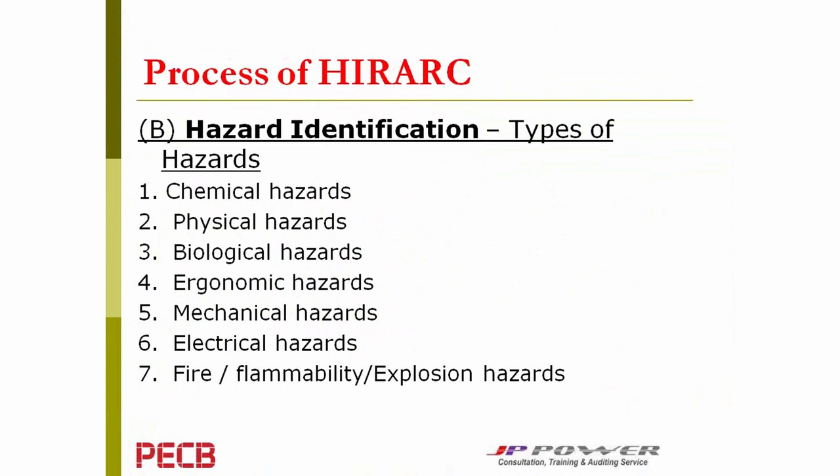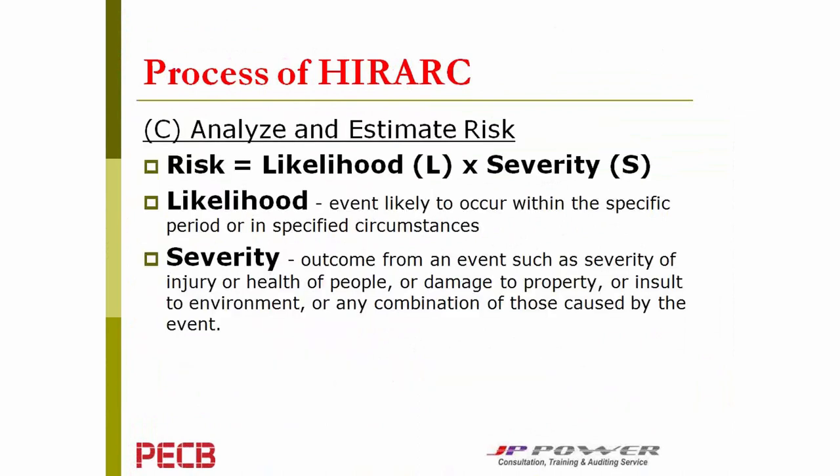Once we have identified a hazard, it is very important to determine how dangerous it is — this is what we call the risk. Likelihood refers to the probability that a hazard could occur, while severity refers to how severe the consequences would be in terms of injury, ill health, or damage to property. Risk is calculated as likelihood multiplied by severity.